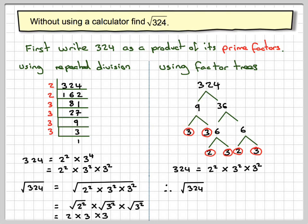Therefore the square root of 324 is 2 times 3 times 3. 2 3s are 6, 6 3s are 18.